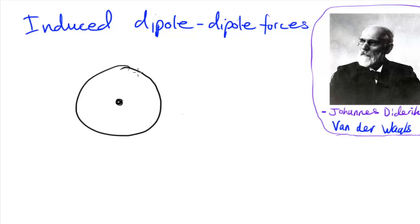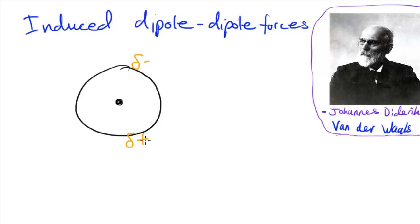Sometimes, since these electrons are always moving around, they are more likely to be distributed on one side than the other. If that happens, we've got an uneven distribution of charge in this atom, and a dipole forms. So we'd have a slightly negative symbol on one side where the electrons are more concentrated, and a slightly positive symbol on the other side.